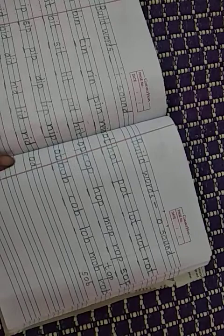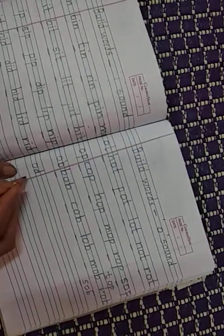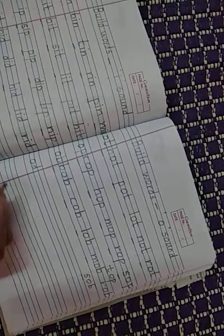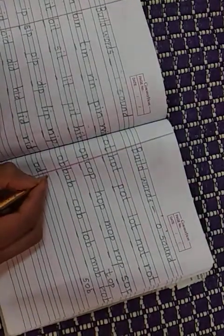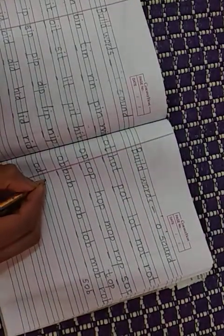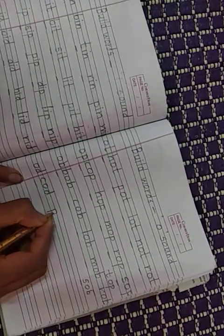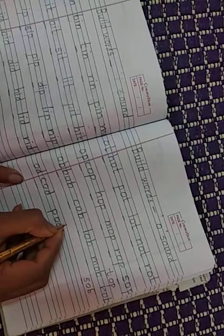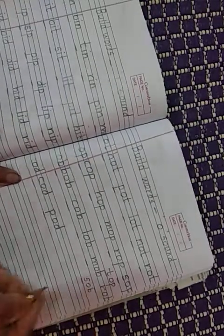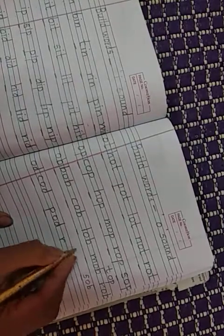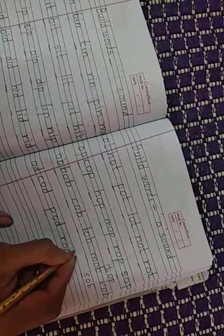Then this one. OD words. We will see now the last OD words. OD words. OD means C, O, D, C, O, D. P, O, D, P, O, D. C, O, D, P, O, D. Then children, R, O, D. Yes, the most important: R, O, D, rod.